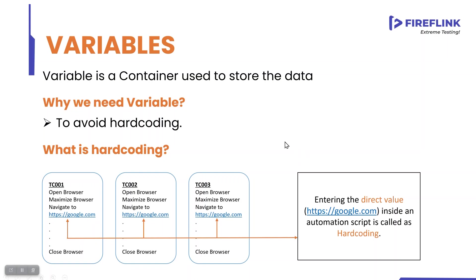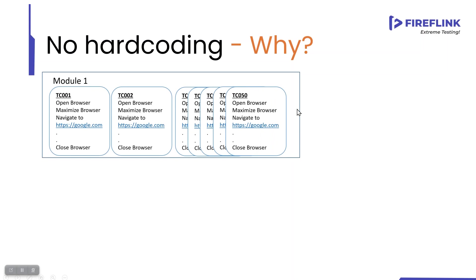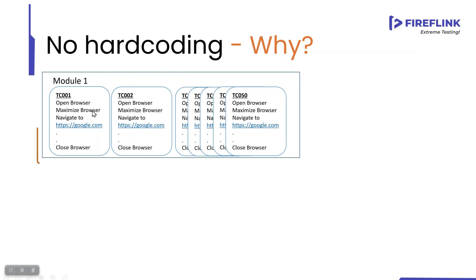Now, why should we not hard code? In automation, we should never hard code data — we should always use a variable. Let us take a scenario. I have a module with around 50 test cases. In all those 50 test cases, I have used this direct URL — that is, I have hard coded the URL value.